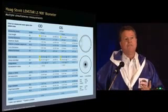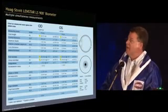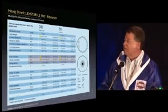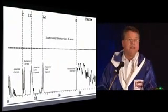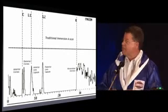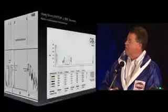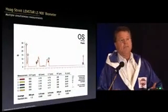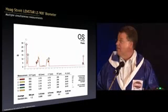You get a tremendous amount of information — this is with one button push for each eye. This is what you get, and these are just the Ks right here. So we all know what this is — this is an immersion A-scan: anterior cornea, posterior cornea, anterior lens capsule, posterior lens capsule, vitreo-retinal interface. With the LENSTAR, it gives you that information looking just like an immersion A-scan.